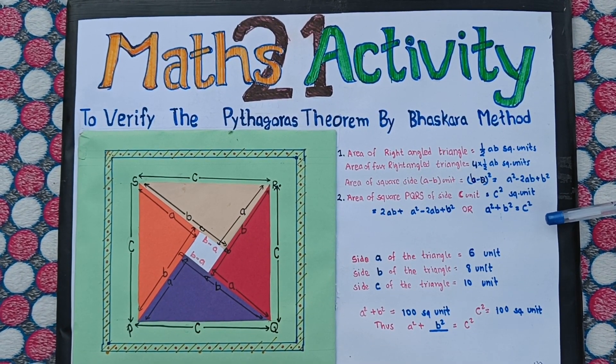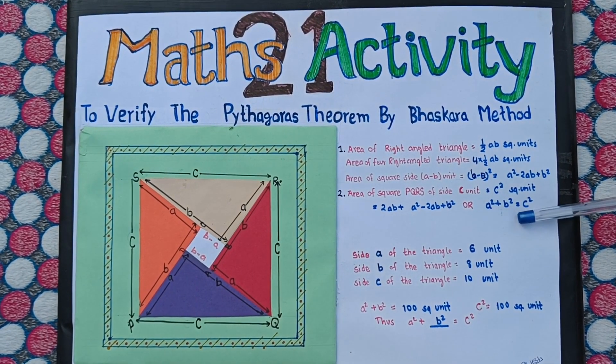Hence, the Pythagorean theorem is proved: A square plus B square equals C square. Thank you.